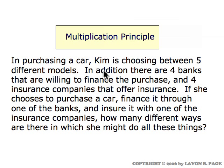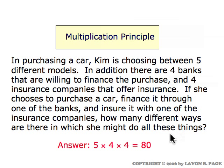In purchasing a car, Kim is choosing between five different models. She also has four choices for which bank provides the financing and four insurance companies to choose from. If she chooses to purchase a car, finance it through one of the banks, and insure it with one of the insurance companies, how many different ways can she proceed? The answer is five times four times four, or eighty — five choices for her model of car, times four choices for the bank, times four choices for the insurance company.